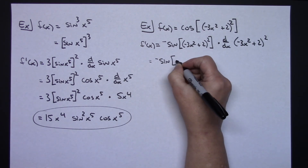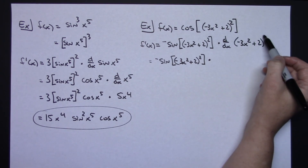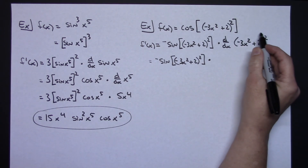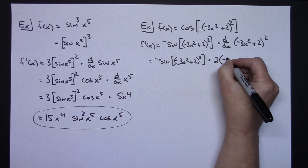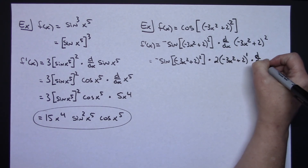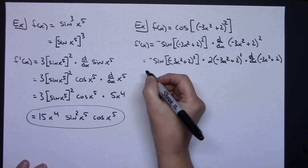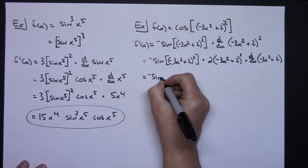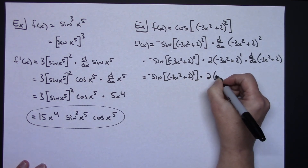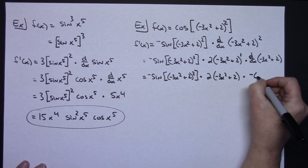Using d/dx notation lets me focus on just the derivative of the inside part. My outside function is x squared and my inside is negative 3x squared plus 2, so I do power rule: bring the 2 down in front, 2 times (−3x²+2), subtract 1 from the exponent, then times the derivative of the inside (−3x²+2), which is just negative 6x.